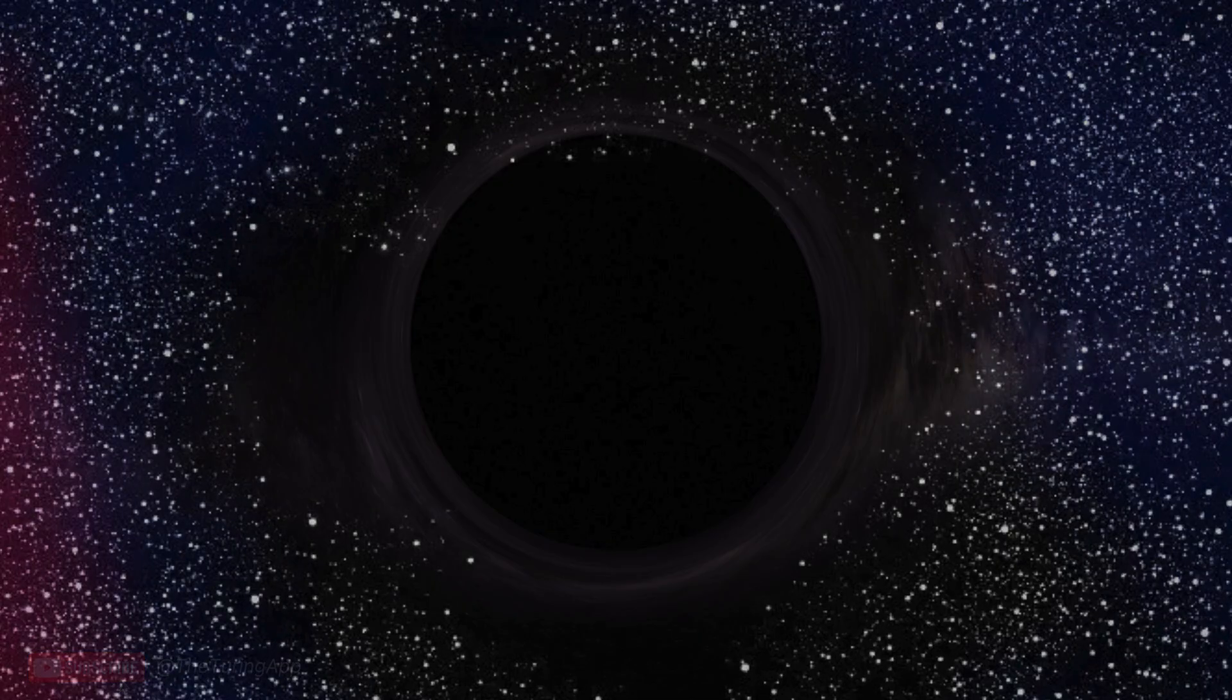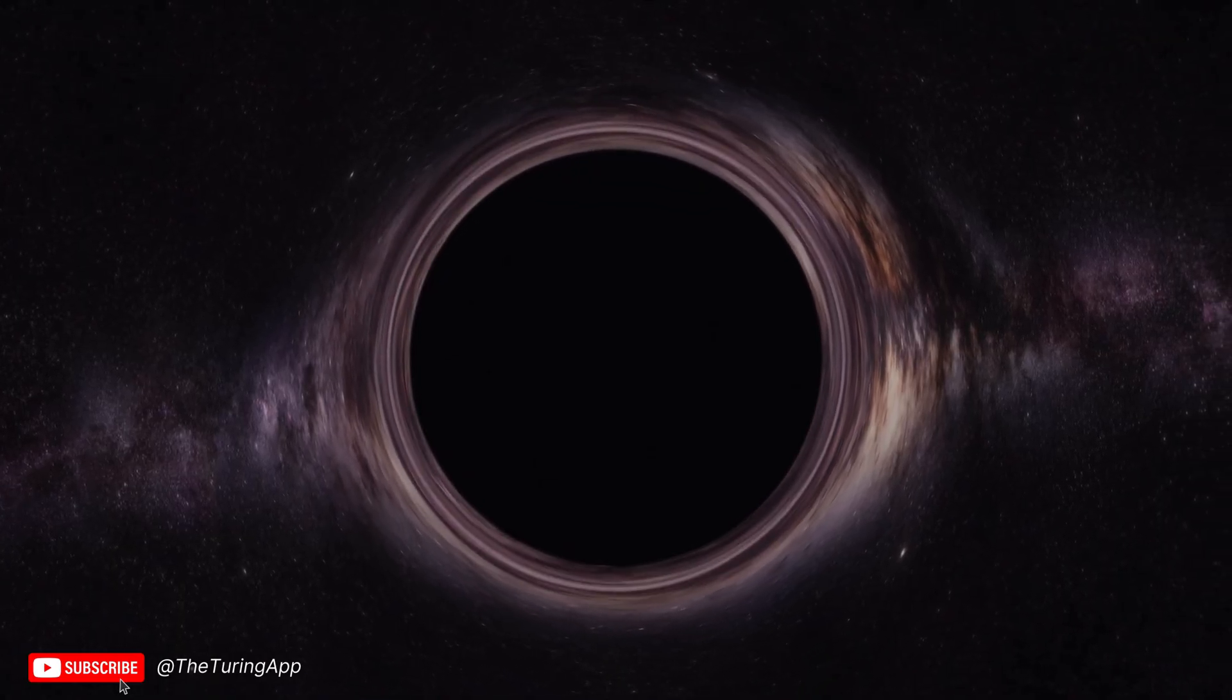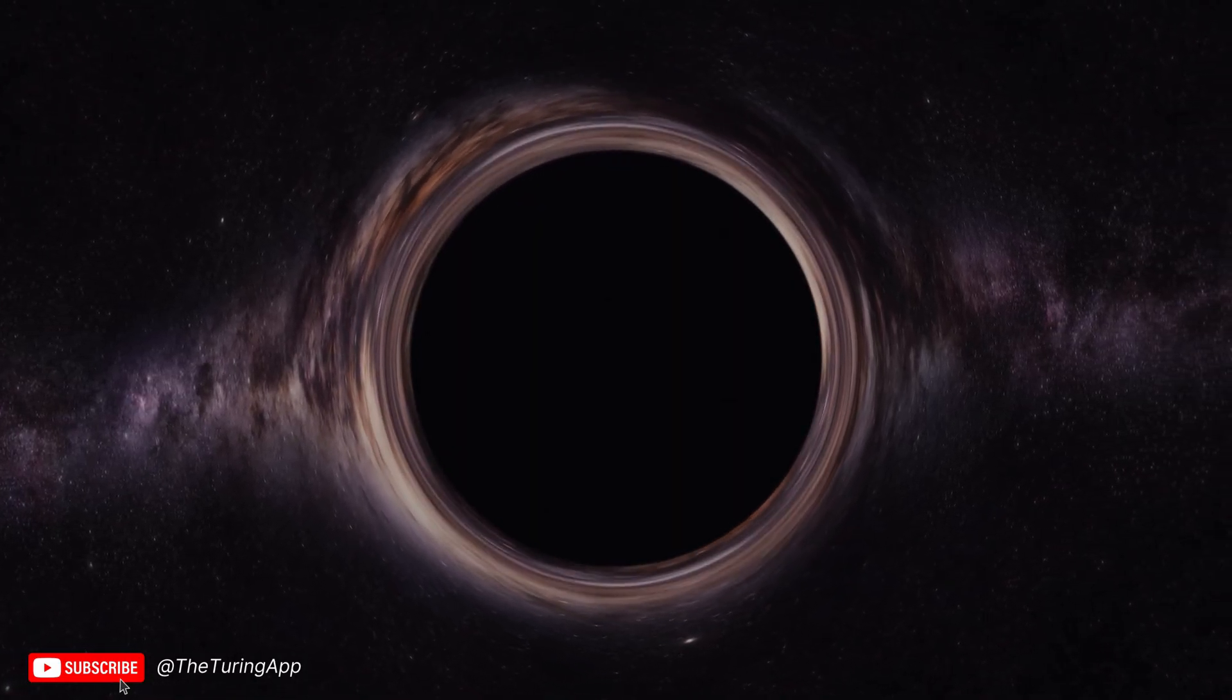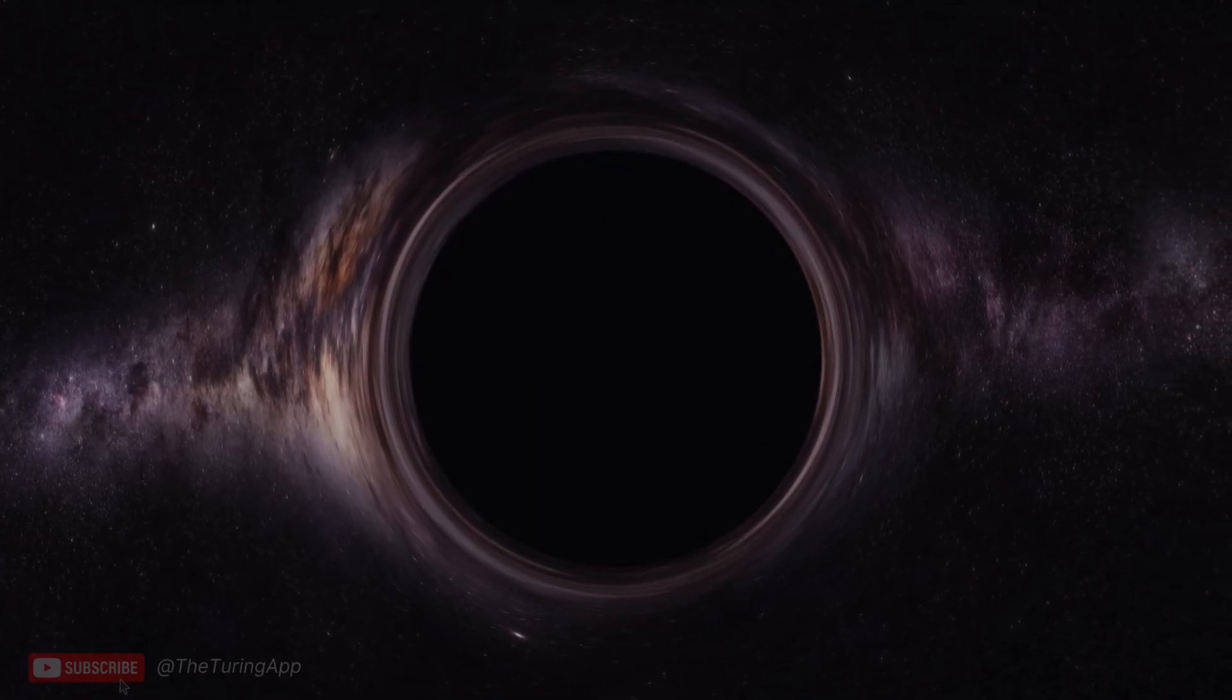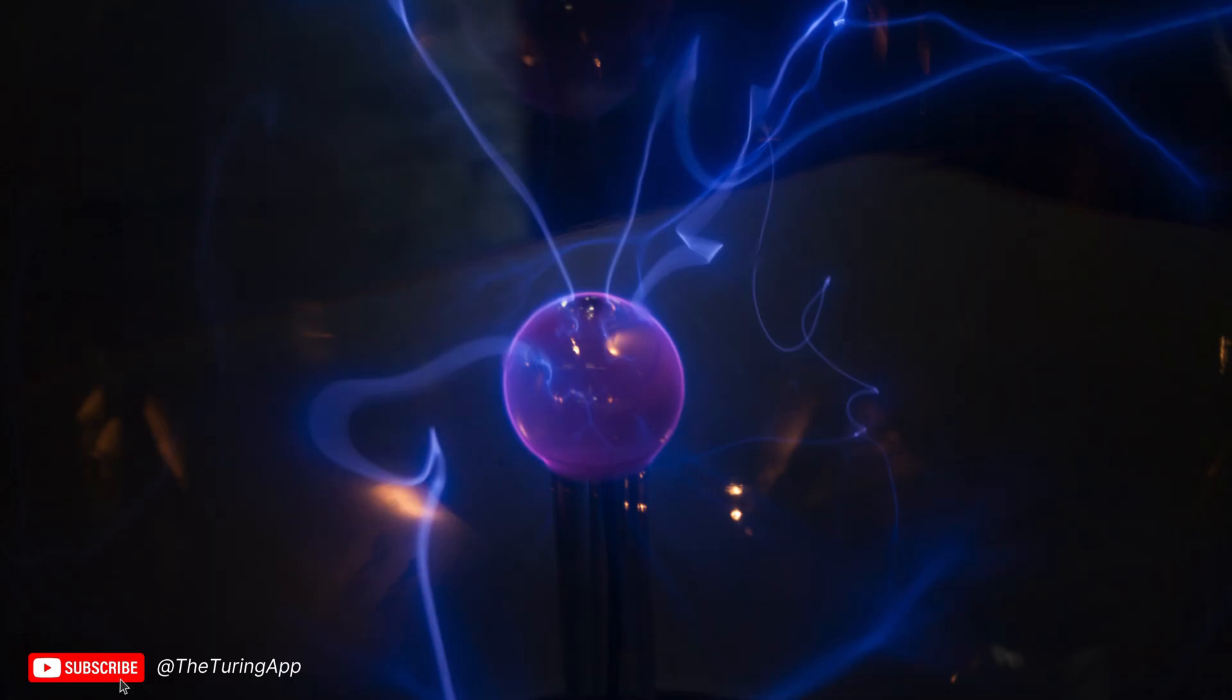The mysteries of voids don't end with their emptiness. What lies within these vast expanses of near-nothingness? Could they conceal phenomena yet to be discovered? One possibility is rogue black holes. Freed from the gravitational pull of galaxies, these invisible wanderers could drift undetected through the void, their presence betrayed only by the faint warping of light around them. Another possibility is dark matter. Voids, though seemingly empty, may harbor vast amounts of this mysterious substance, invisible to our telescopes but exerting a gravitational pull. Observing how galaxies at the edges of voids move might provide clues about the dark matter lurking within.